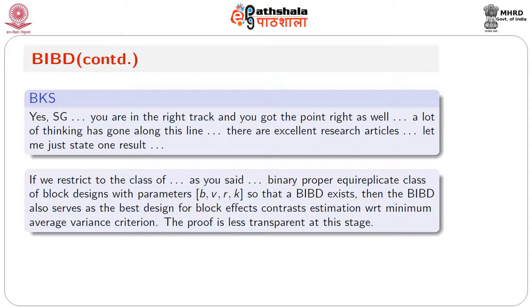When we tried to argue that this result extends to the average variance of block-effects contrasts, we went quite far and could see that the average variance can be expressed in terms of the harmonic mean of the eigenvalues of the D matrix arising in the context of block-effects contrasts. But we got stuck because we are not sure whether all eigenvalues of the D matrix will be equal or not.